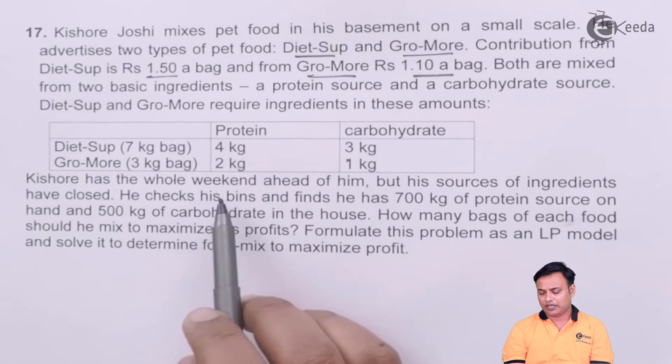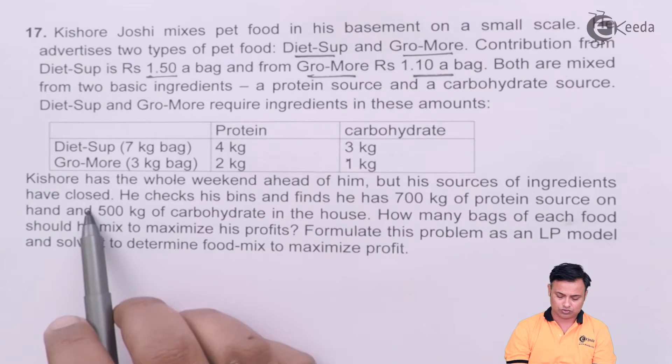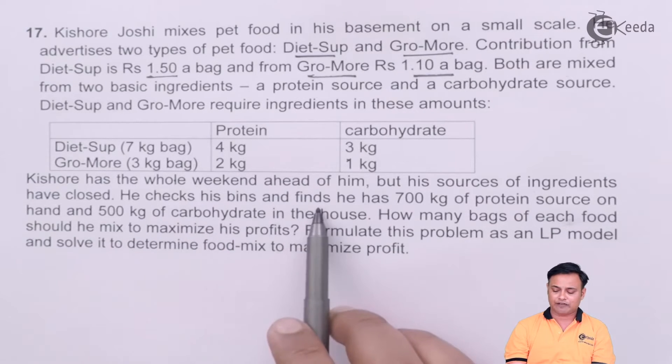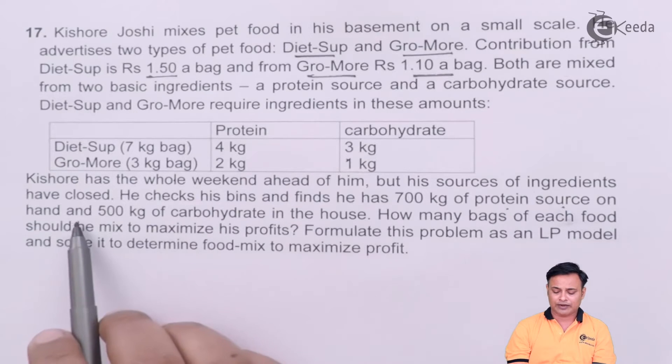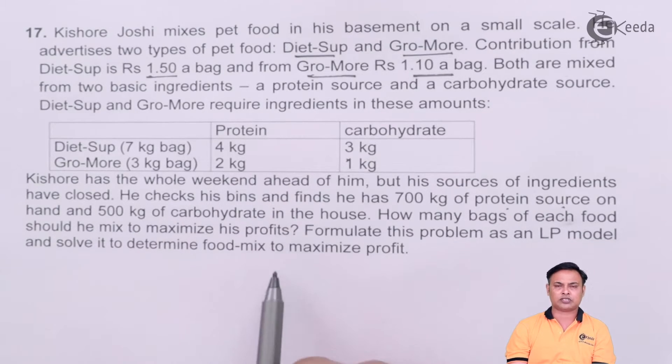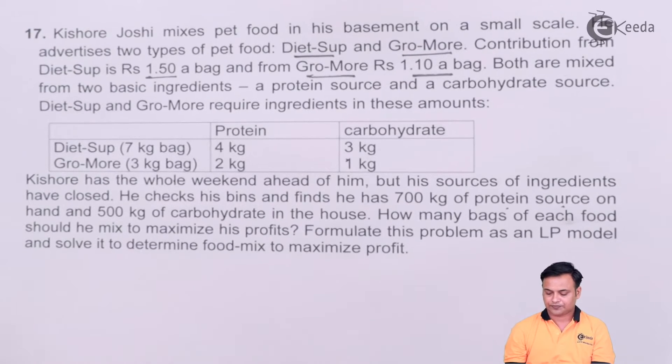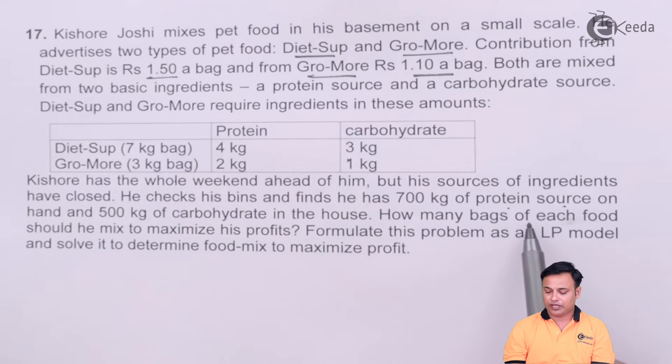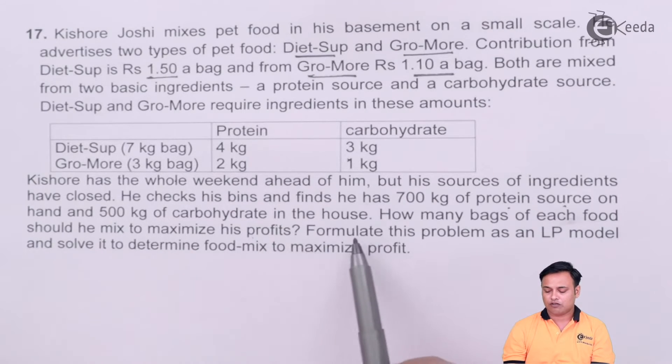Kishore has the whole weekend ahead of him but his sources of ingredients have closed. He checks his bins and finds he has 700 kg of protein on hand and 500 kg of carbohydrates. This is the raw material constraint. How many bags of each food should he mix to maximize his profits? Formulate this as a linear programming model.